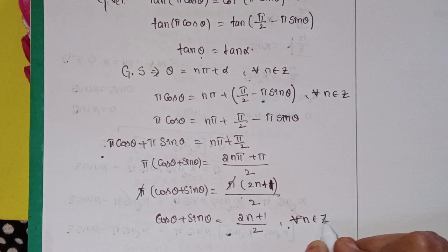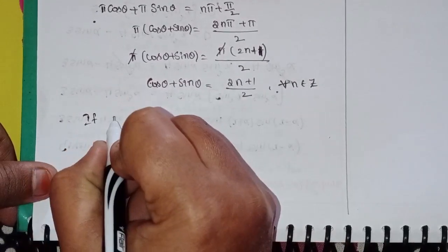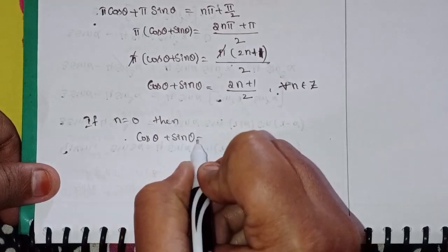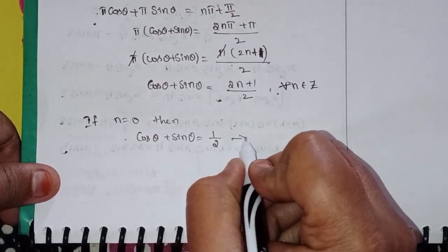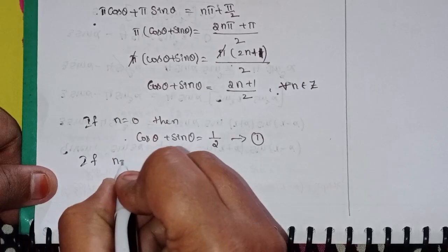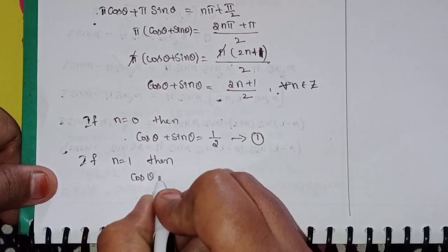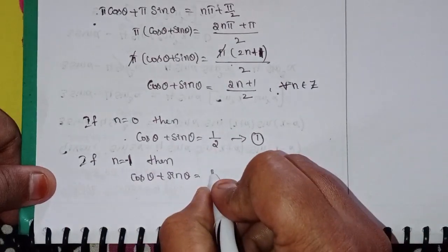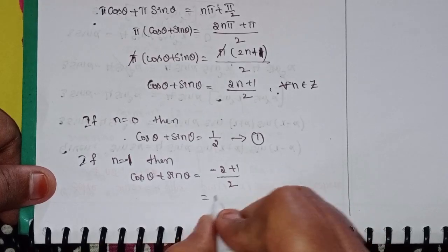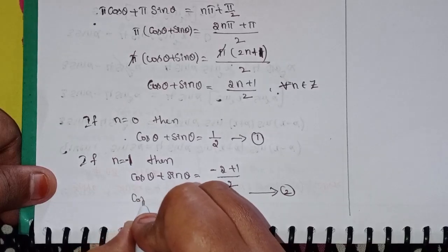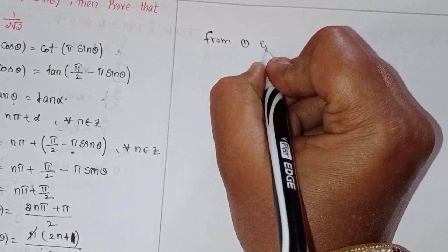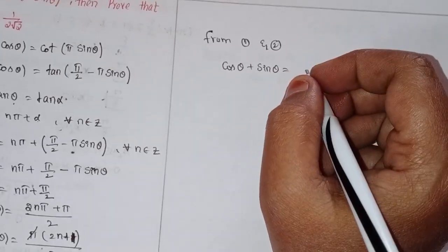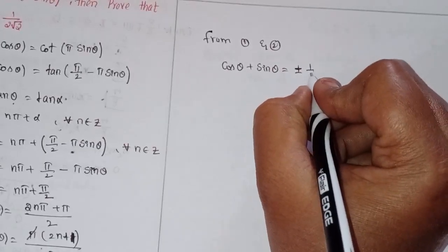For n = 0: cosθ + sinθ = 1/2. For n = −1: cosθ + sinθ = −1/2. Combining both cases from equations 1 and 2, the left-hand sides are the same, so cosθ + sinθ = ±1/2.